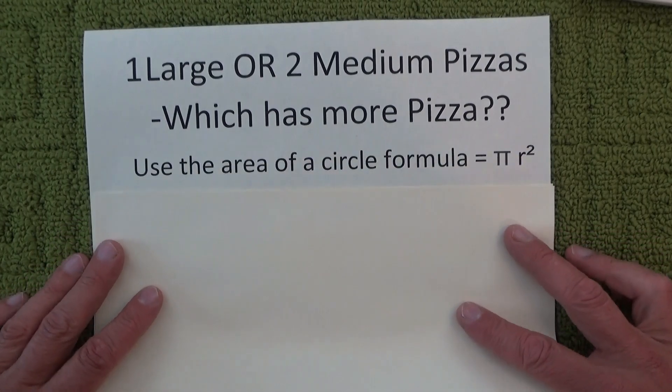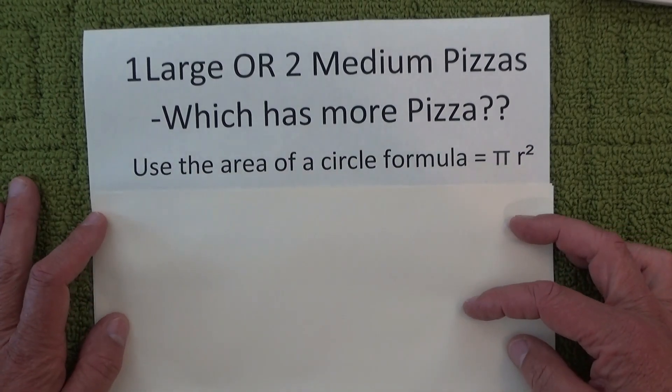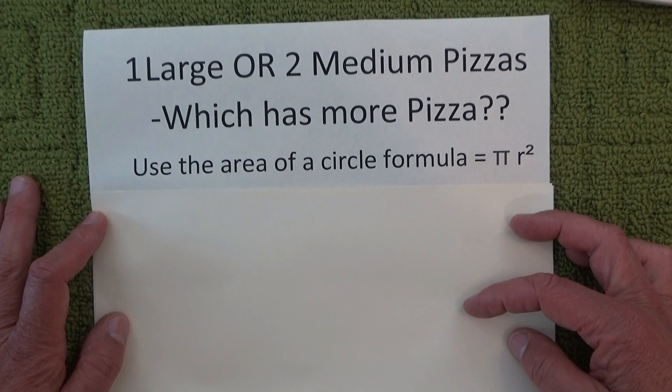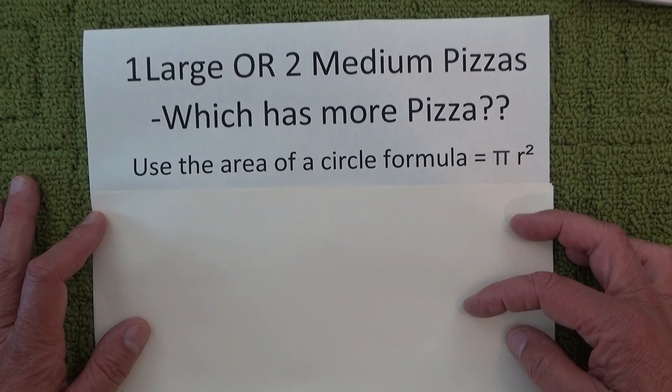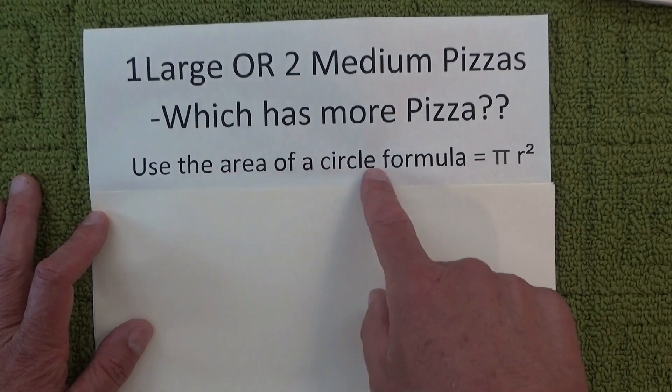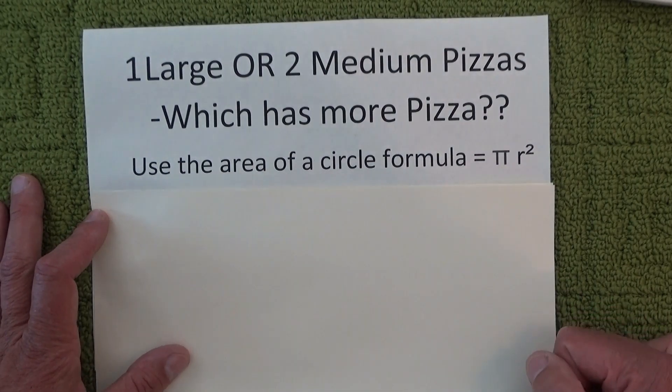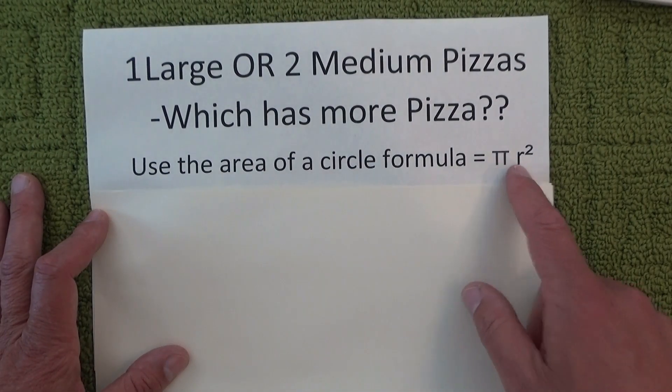Okay, so we've just worked out the diameter of both the large and the medium pizzas, so all we need to do now is use the area of the circle formula from high school maths, which is π r².